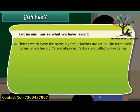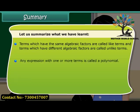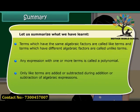Terms which have the same algebraic factors are called like terms and terms which have different algebraic factors are called unlike terms. Any expression with one or more terms is called a polynomial. Only like terms are added or subtracted during addition or subtraction of algebraic expressions.